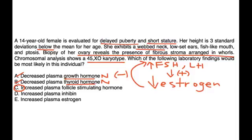Increased plasma inhibin and increased plasma estrogen — estrogen levels are low, so that's wrong. Inhibin levels are also low in Turner Syndrome, so that's wrong. The answer is C.